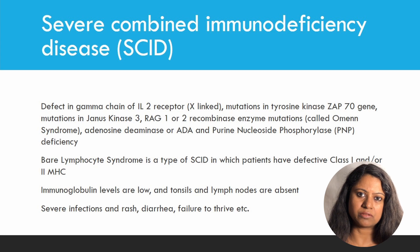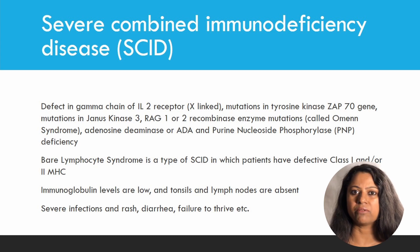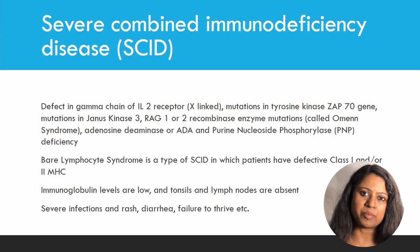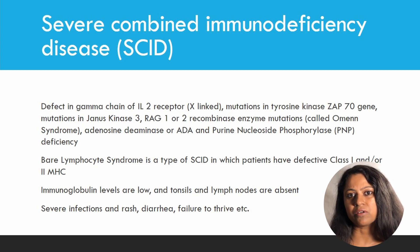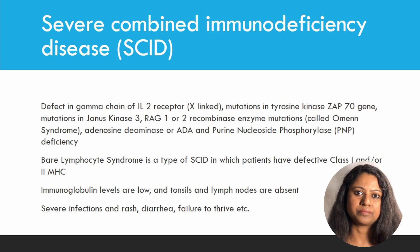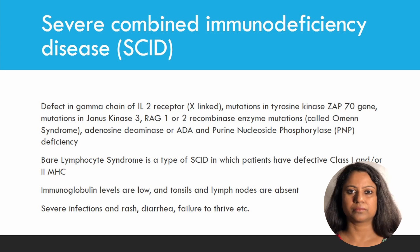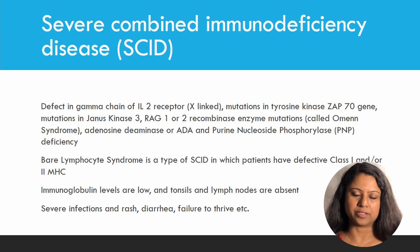Most common causes of SCID are enzyme defects in ZAP70, recombinase enzymes RAG1 and RAG2, ADA or adenosine deaminase deficiency, and PRP enzyme deficiency. Some defects may be caused by abnormality in the interleukin-2 receptor. Omenn syndrome, caused by recombinase enzyme defects, is characterized, apart from the immunodeficiency, by erythroderma and skin peeling. Immunoglobulin levels are low in all cases of SCID, and live vaccines are contraindicated.